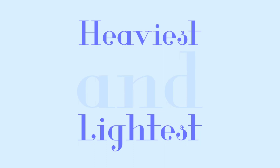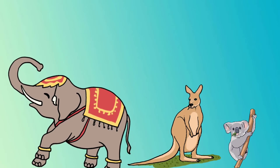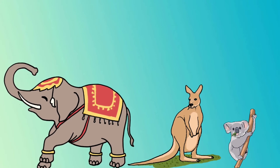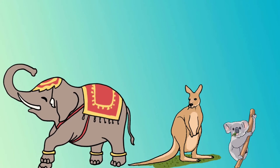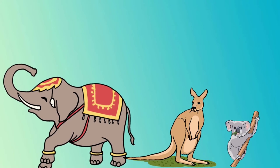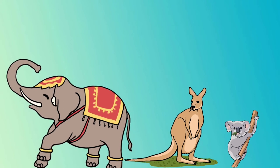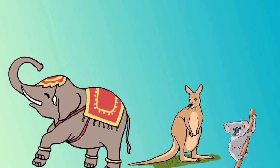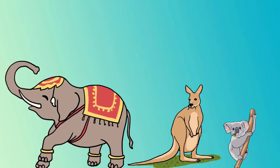Heaviest and lightest. Wow — elephant, kangaroo, and koala. Which of these three is the heaviest and which do you think is the lightest? Right. The elephant is the heaviest and the koala is the lightest.